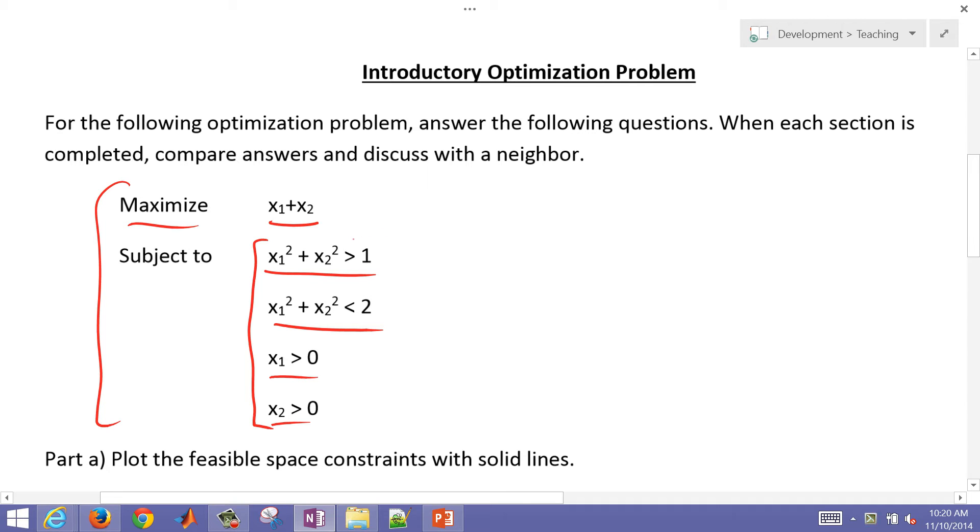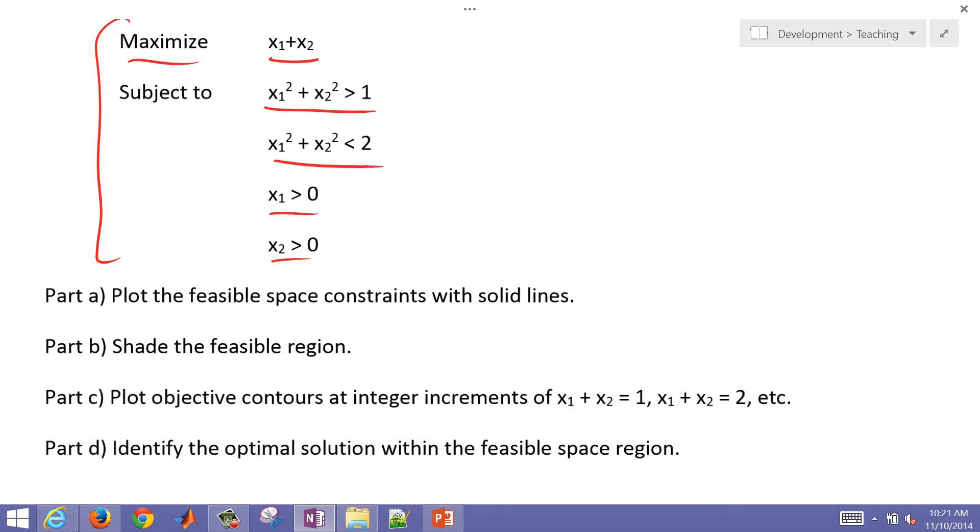If we didn't have these constraints here, x1 would go to infinity and x2 would also go to infinity to maximize the sum of these two. But we have constraints that will bound the region and tell us where we can search for an optimal solution. So what we want to do first in part A is just plot the feasible space, the area where x1 and x2 can be selected that satisfies these constraints.